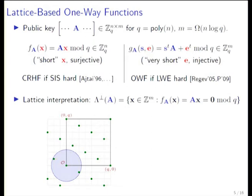Another function used in many cryptographic constructions is the learning with error function, introduced by Regev. This function is also indexed by a matrix A, but this time we multiply A to the left by an arbitrary vector s. S is not short, it's a random vector modulo q. Then we perturb the result by adding a very short noise vector e. In the LWE function, e is even shorter.